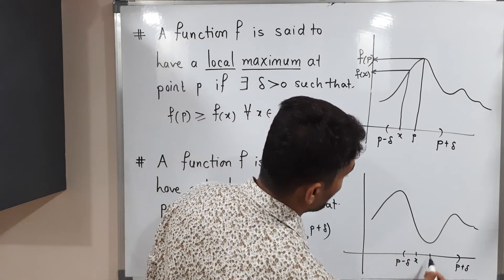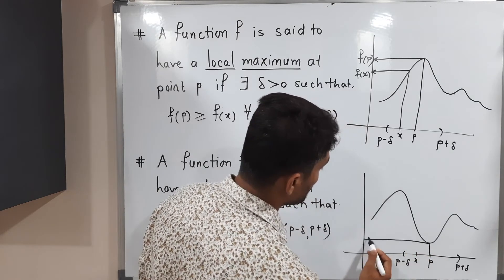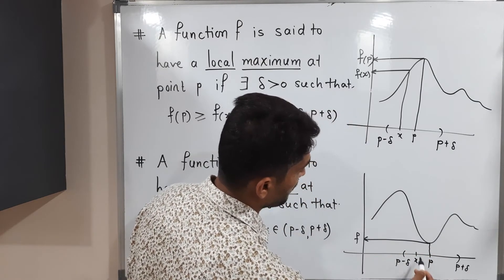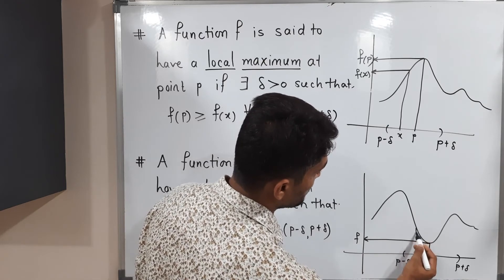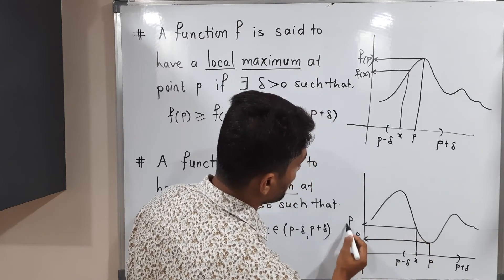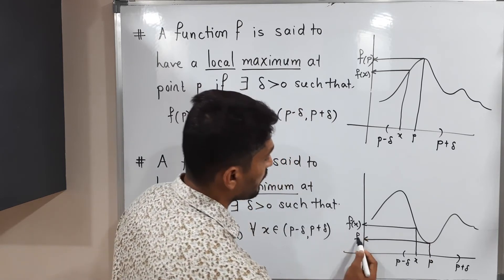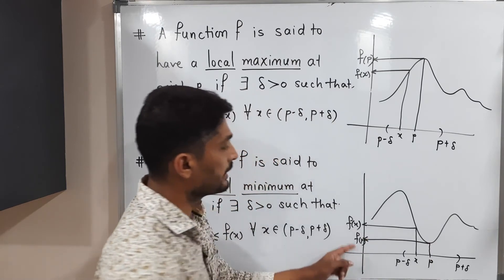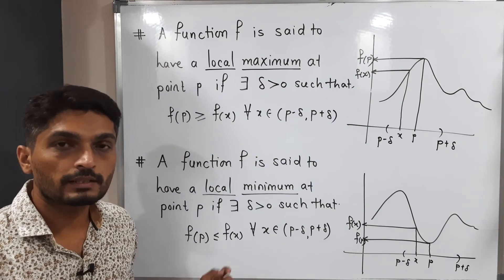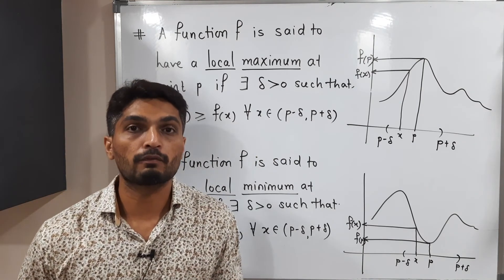If you take any point X in this neighborhood, we get the image of F at point P and the image at point X. So what we get is F of P is less than or equal to F of X. Therefore, we say the function has a local minimum value at point P.